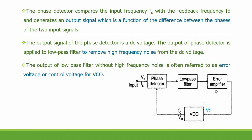Since this voltage is very small, it is amplified by the error amplifier, and the error voltage — also called control voltage — is fed to the VCO. The VCO, in response to the control voltage, changes the output frequency of the oscillator so that the incoming frequency FS becomes equal to the output frequency F naught. When this happens, we say the PLL is locked.